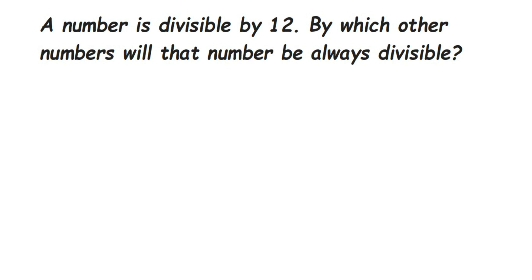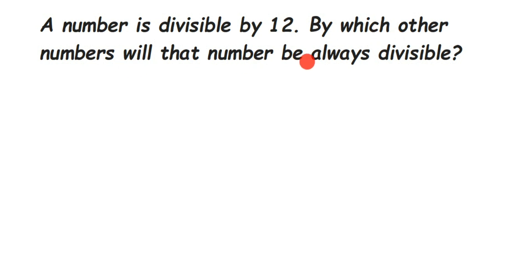Here is a question: a number is divisible by 12. By which other number will that number always be divisible? So there's an unknown number, and that number is divisible by 12. Divisible by 12 means we can divide that number by 12, and the question is by which other number will that number always be divisible.